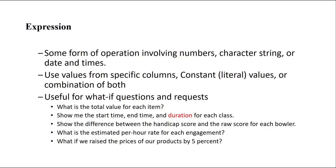Let's get started. We have expressions versus columns. A column means we are using the column that we have inside the tables of the database. For example, in a customers table we have customer first name, customer last name, customer birthday — all of them are simple columns. But sometimes we need to do some operations on a column. For example, we have the birth date of a person and we want to extract the age of the person, so we have to do some calculations.